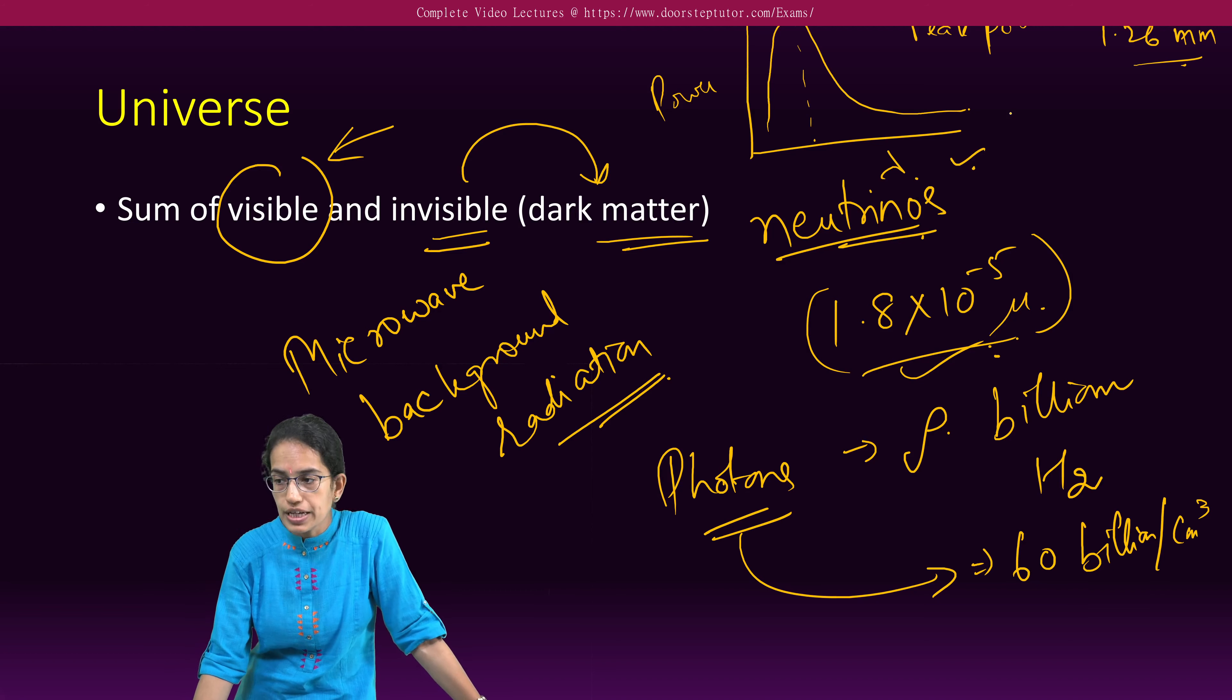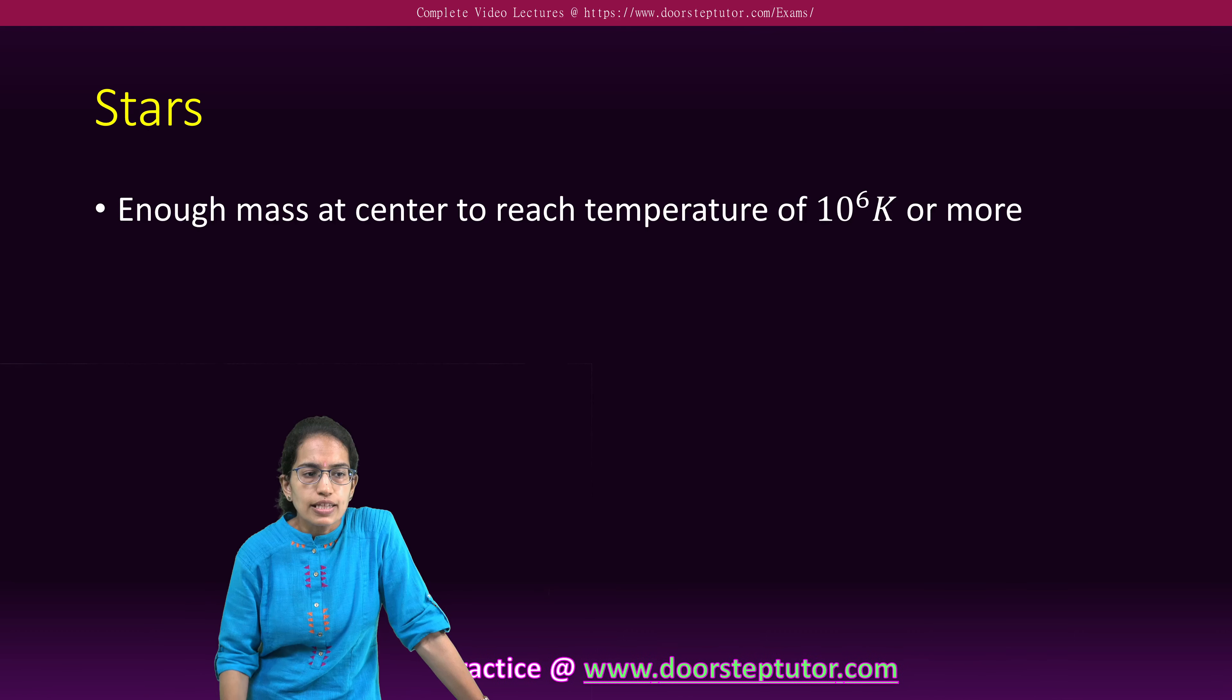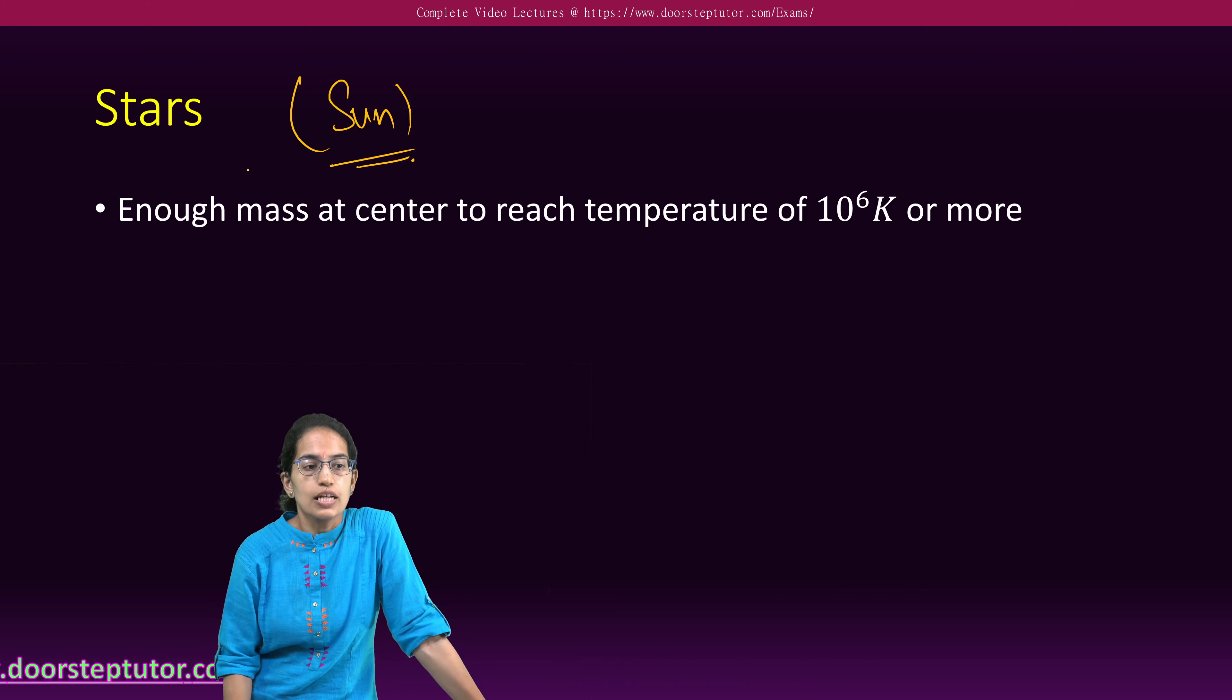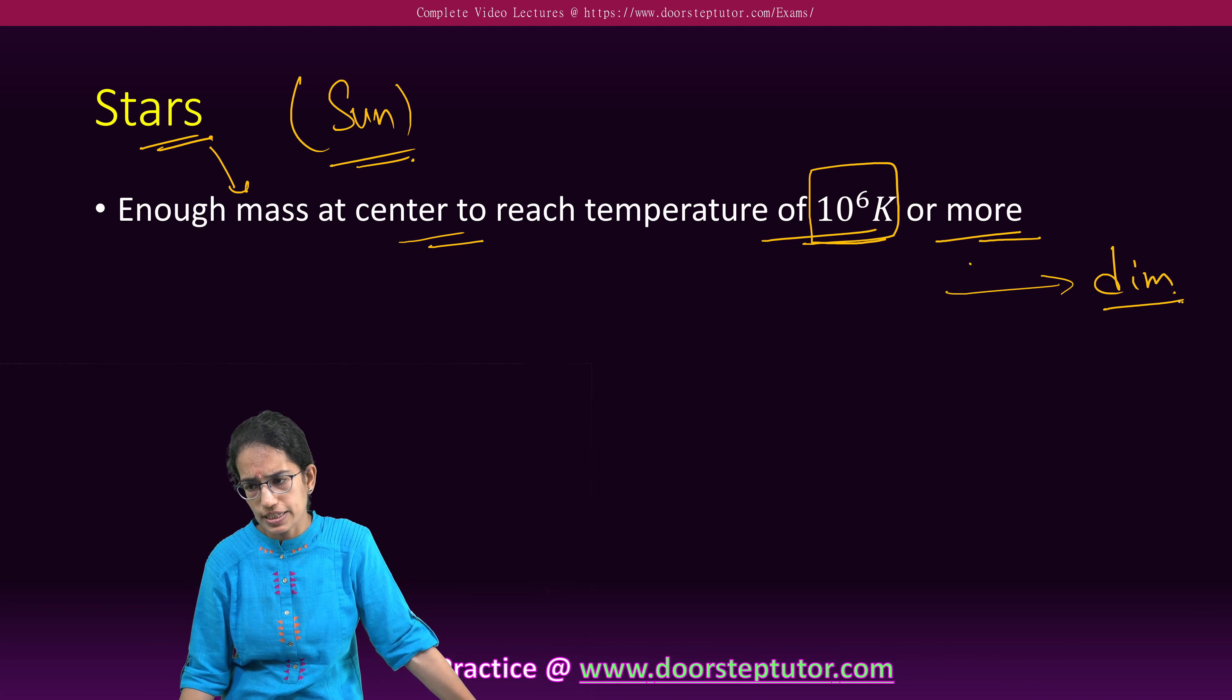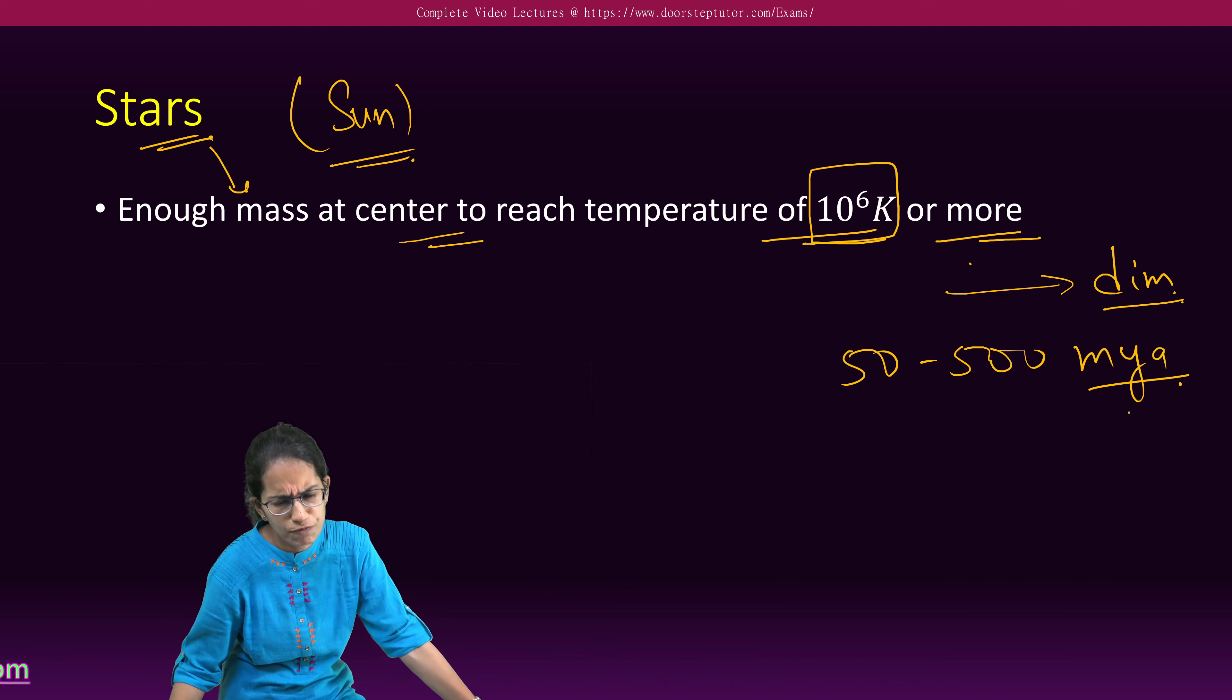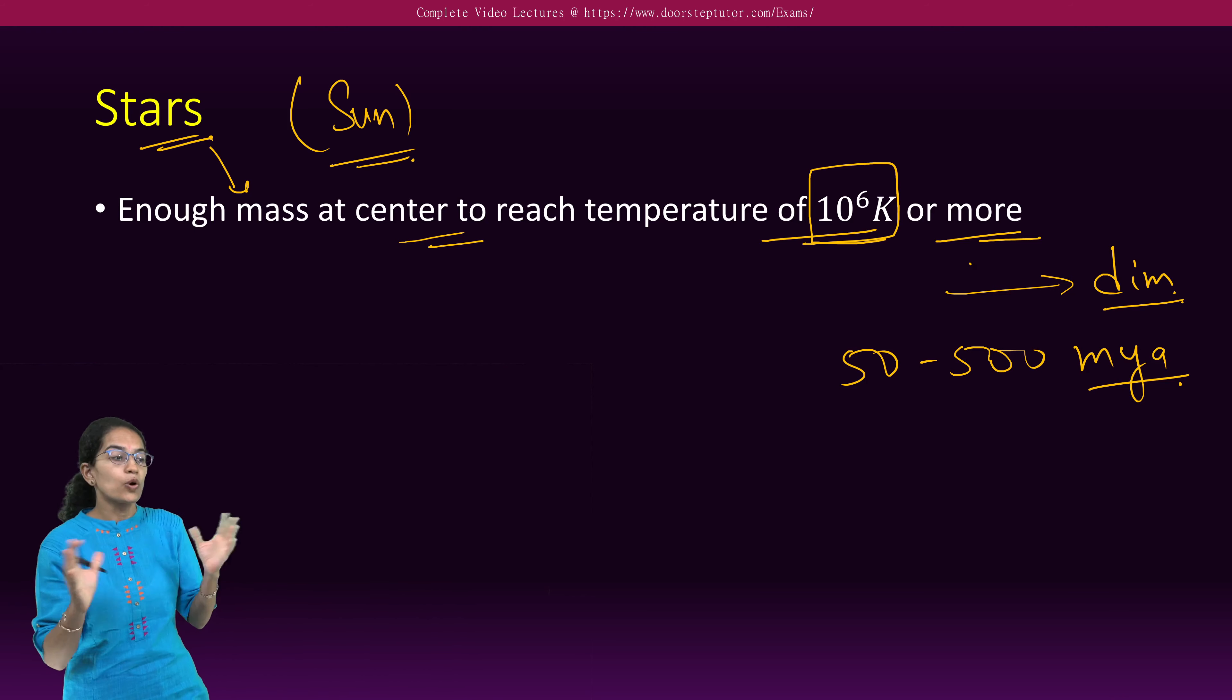So again a very important thing that you must understand. Whenever we talk about stars, sun as one of the stars, we need to understand how do we classify star. So star is any object that has enough mass at a center to reach a temperature of 10 raised to power 6 kelvins or more. If it is small, it can last for a longer time and can be relatively dim. If it is big, it would burn rapidly and it would take 50 to 500 million years to actually have it and blow it completely.